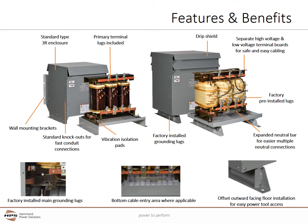The HPS Sentinel is built with a number of important features and benefits. These include a Type 3R enclosure for indoor and outdoor use. Enclosures up to 45 kVA come standard with wall mounting brackets. All enclosures have a place for bottom cable entry. Mounting feet have mounting holes positioned for simple installation. Mechanical grounding lugs are provided in all units, and primary and secondary lugs are provided up to 271 amps.